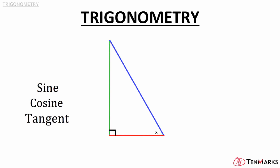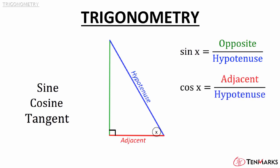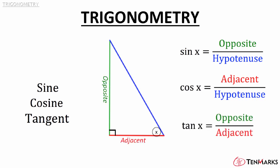The sine of x is equal to the length of the opposite side divided by the length of the hypotenuse. The cosine of x is equal to the length of the adjacent side divided by the length of the hypotenuse. And the tangent of x is equal to the length of the opposite side divided by the length of the adjacent side.